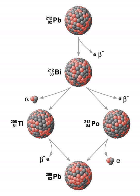234Th is the daughter of the parent 238U. 234mPa is the granddaughter of 238U.